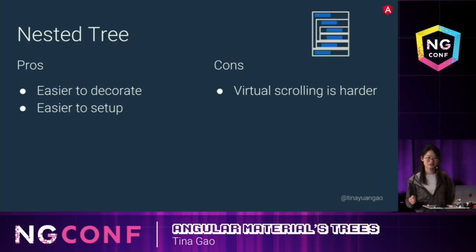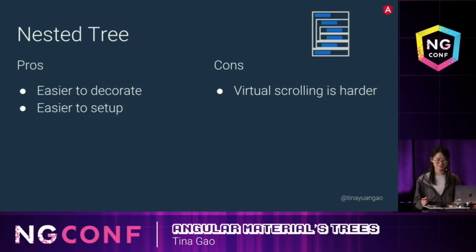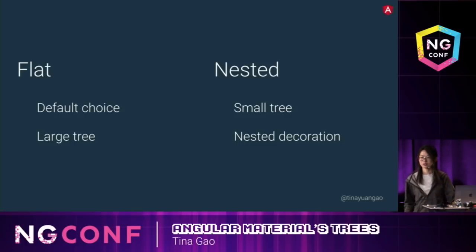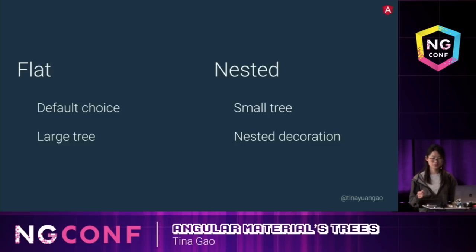For the nested tree, because we preserve the parent-child relationship, it's easier to decorate the nested tree to show this kind of relationship, and it's easier to set up because it doesn't need a flattener. However, because the DOM structure is nested, it's hard to add virtual scrolling to nested tree. I suggest use flat tree as a default choice because it can handle large amounts of data and it also has better performance. But if you have a really small dataset where you just want to build a demo, or you have some special decoration that's hard to do in flat tree, you can use the nested tree.